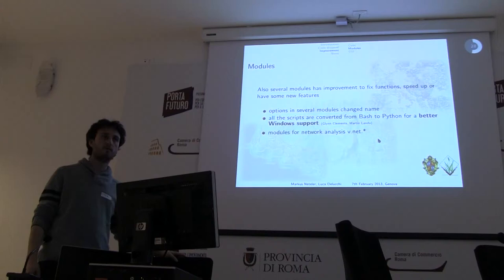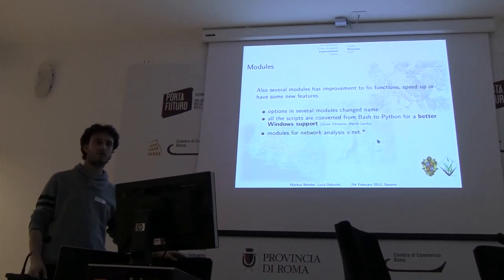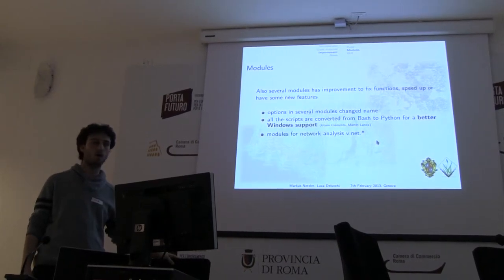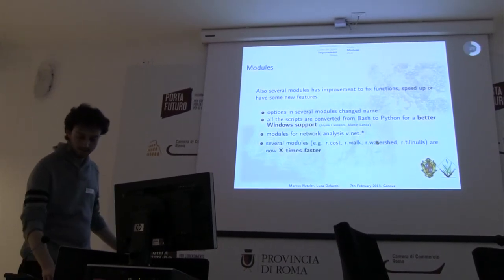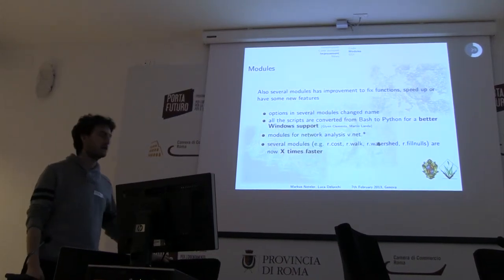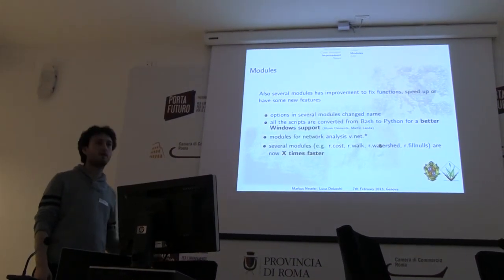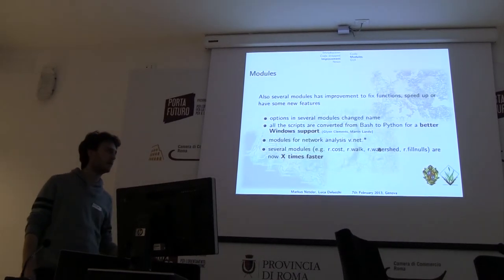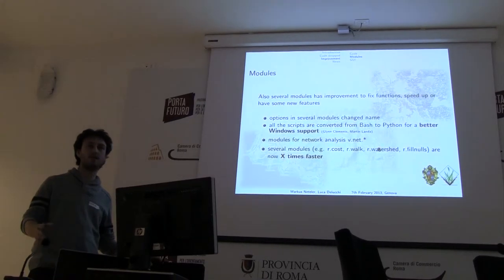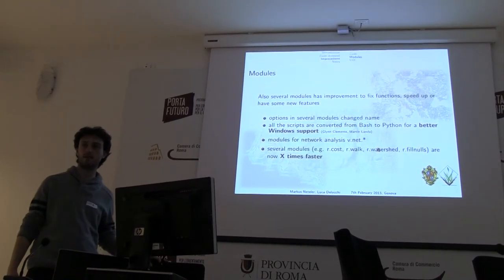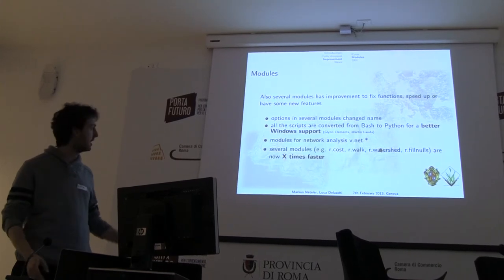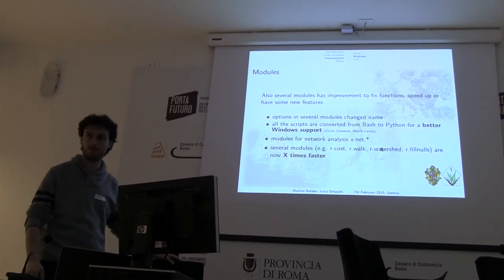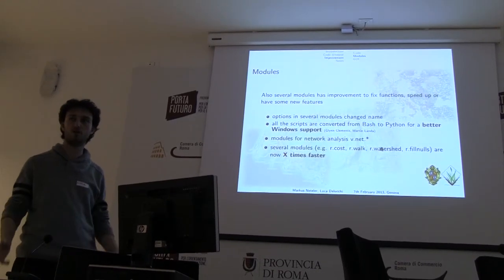The modules are also faster than before. All the modules for vector analysis that were in GRASS 6.4 are there, but there were a lot of problems and not all were working well. Several modules are really faster now — we are speaking about 10 to 1000 times faster. For example, r.cost, r.walk, and r.drain are maybe 1000 times faster than before, especially with large datasets.